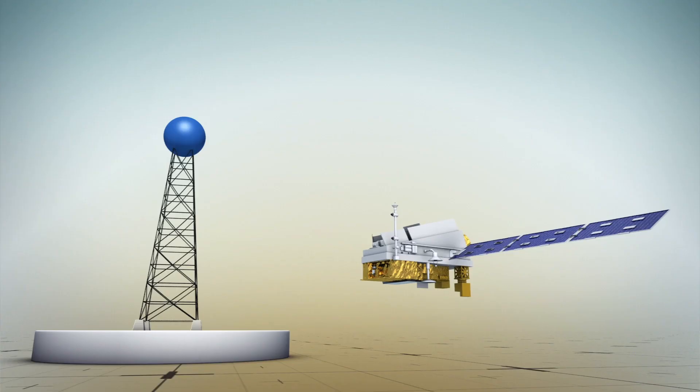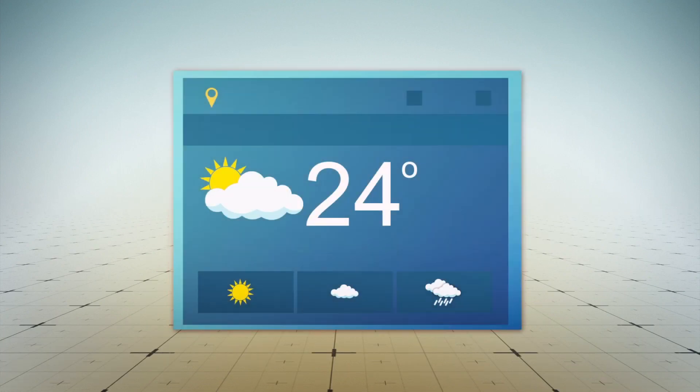According to the study, the network transmits at nearly the same frequency as weather satellites and could produce a signal that looks like that of water vapor. This could result in inaccurate weather forecasts.